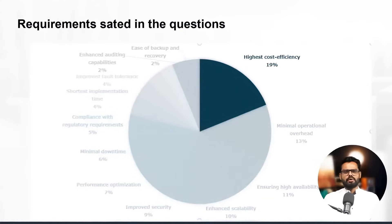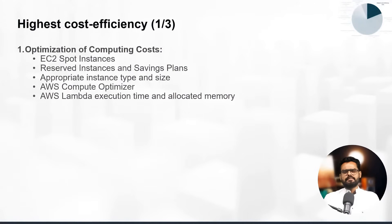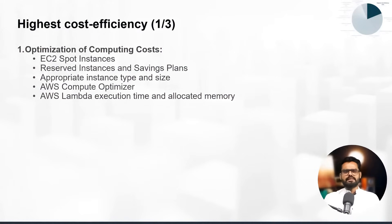First, you will often be asked questions that require selecting the most cost-efficient options. Overly excessive architecture unnecessarily increases the cost, so you should exclude those from your choices. For computing costs, spot instances, reserved instances, and saving plans are frequently tested.